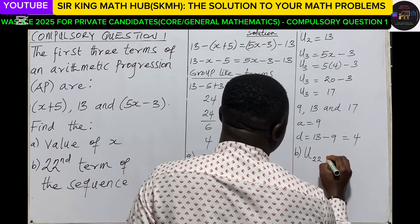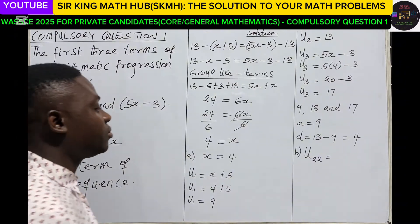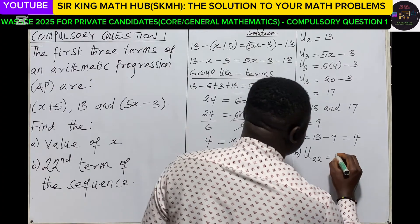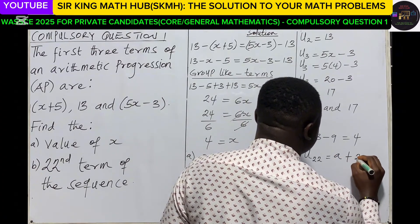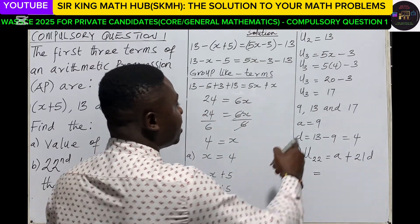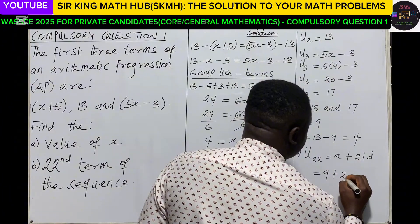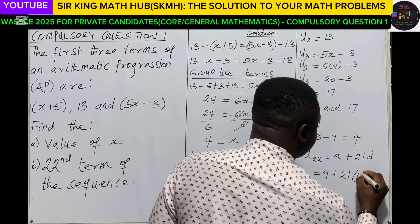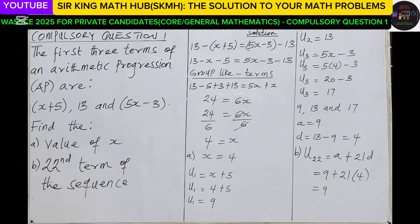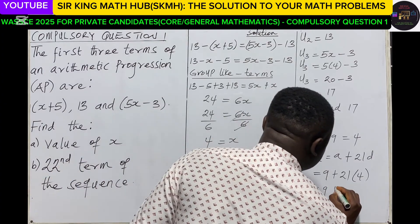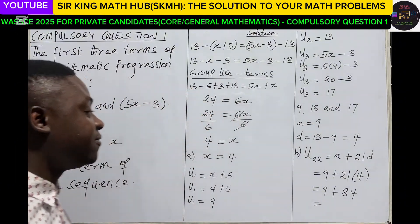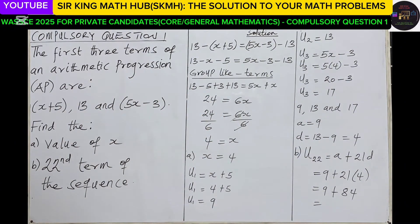With this, part b, we should be able to find the 22nd term. We know the 22nd term when expressed in terms of the first term and the common difference, that is a+21d. So we can do the substitution. We know a as 9 and d as 4. So 21 multiplied by 4, that is 84, and then 9+84, that is 93. So that is for the 22nd term of the sequence.